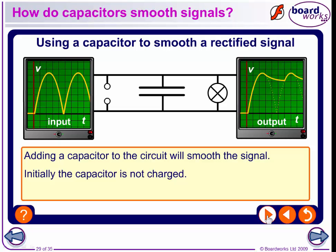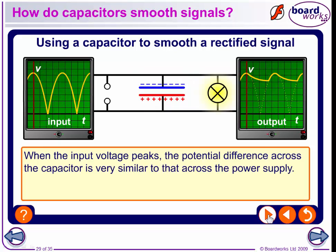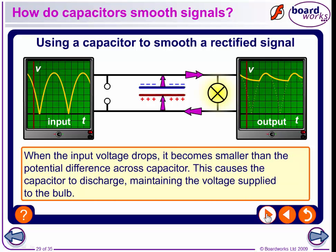Adding a capacitor to the circuit will smooth the signal. Initially, the capacitor is not charged. As the input voltage builds, the capacitor begins to charge. When the input voltage peaks — gets to its highest value — the difference across the capacitor is very similar to that across the power supply, because it charges very quickly. When the input voltage drops, it becomes smaller than the potential difference across the capacitor, and this causes the capacitor to discharge, maintaining the voltage supplied to the bulb. It doesn't discharge immediately or so quickly, because there's the resistance of the light bulb — it discharges fairly slowly. So this is a very smooth decay.